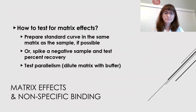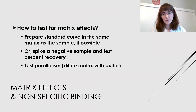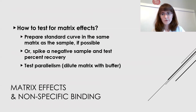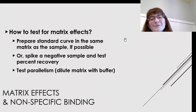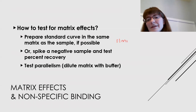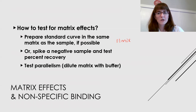We have to think about how we might test for and mitigate these matrix effects. One way to mitigate is to prepare your calibration curve in the same matrix as your sample — this is really critical. To the extent that you can do it, you would much rather make a calibration curve in plasma if you're measuring from plasma than comparing a plasma sample to a pure buffer. A common approach is diluting your samples one-to-one with buffer so that you can match between your calibration curves and your sample.